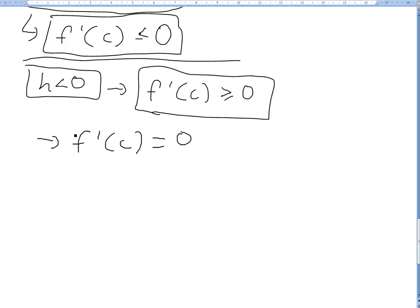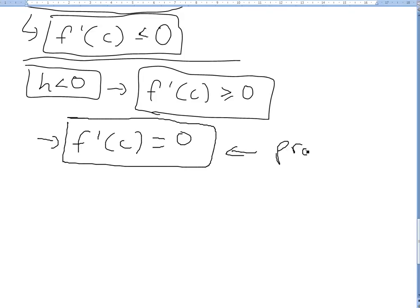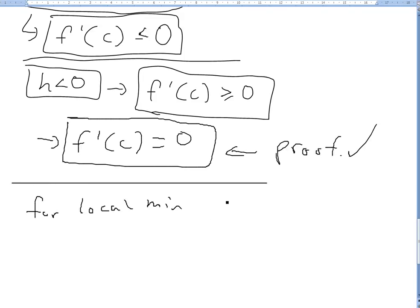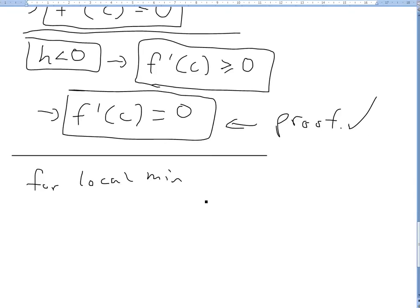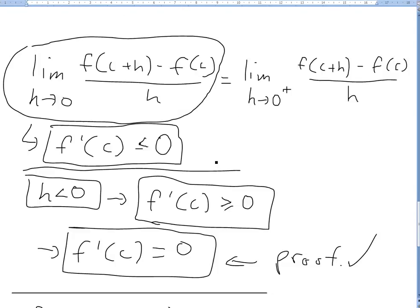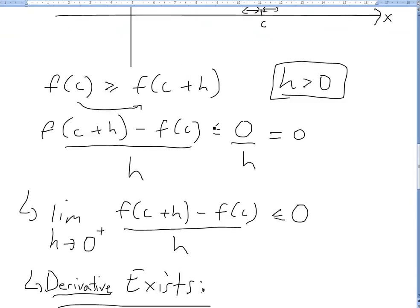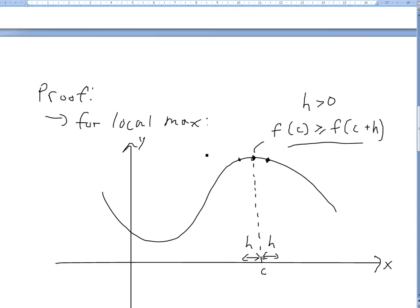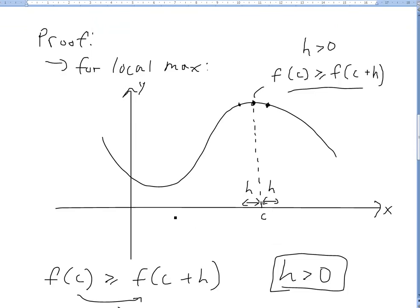So we're given two conditions: the derivative has to be less than or equal to 0, and greater than or equal to 0. The only way that both of these can hold simultaneously is if the derivative is equal to 0. And there's our proof.